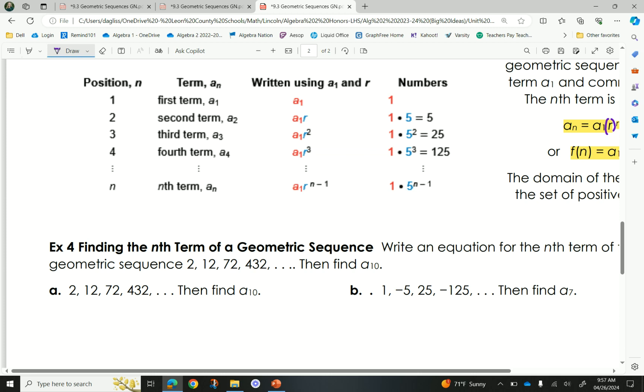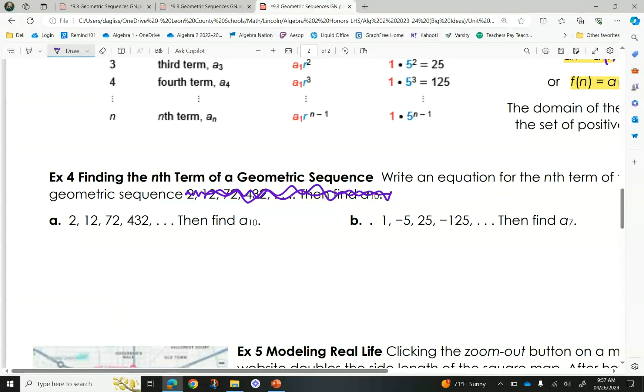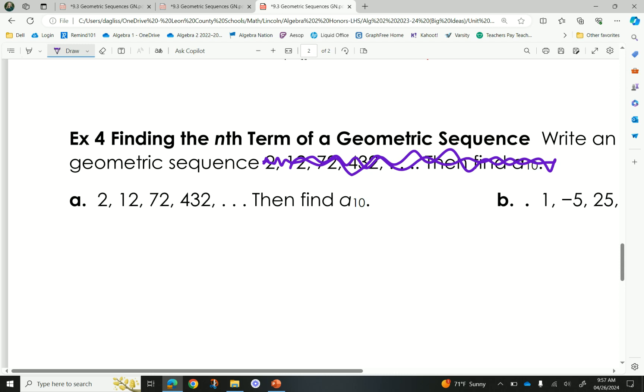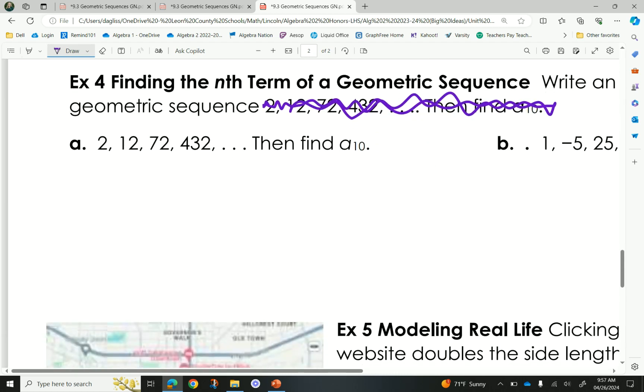Write an equation of the nth term of the geometric sequence. Sorry, I typed this twice. Our first example is 2, 12, 72, and 432. We're going to write that equation, and then we are going to find the 10th term of the geometric sequence. Okay? So, Arlington, what is our first term? It is 2. Thomas, what is our ratio? It is each getting multiplied by 6. Yes. Multiplied by 6. All right, PJ, what's the equation going to look like?